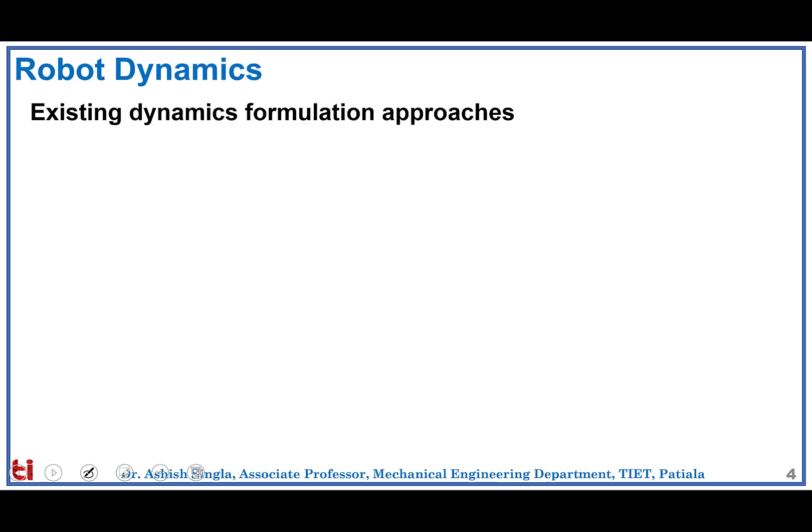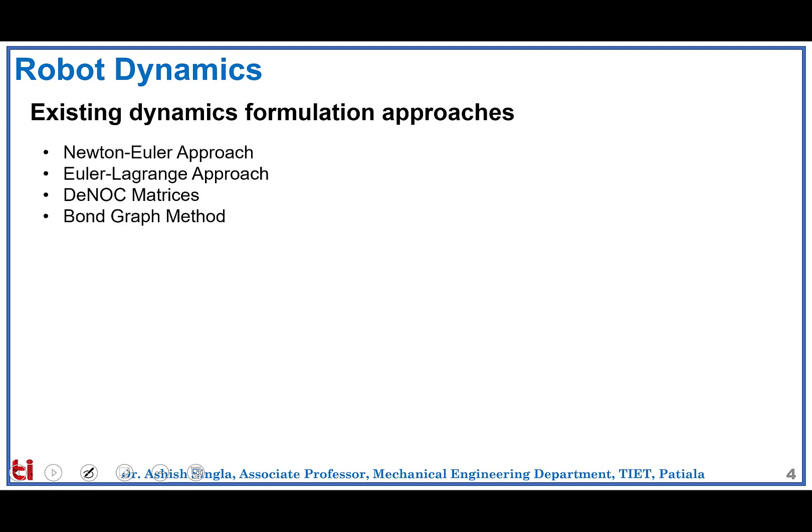There are many approaches available in the literature to develop the dynamic model, such as the Newton-Euler approach, Euler-Lagrange approach, Denavit-Hartenberg matrices, and the bond graph method. Out of these, the Newton-Euler and Euler-Lagrange approaches are most widely used to develop the dynamic model of multi-degree of freedom systems. In this session we will focus on the Newton-Euler approach.